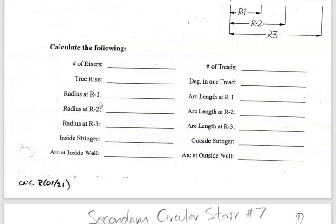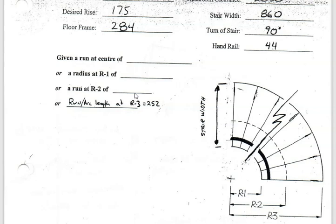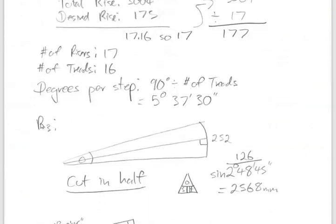Now we focus on the radius at R1, R2, and R3. Every math question usually gives you one of these, and that's enough to find everything else. In this case we are given a run or arc length at R3 of 252. We need to recognize that what we have here is a triangle — each step spans that angle we just found — and we're going to dissect it to discover our radius length. The angle at R3 is 5°37'30".